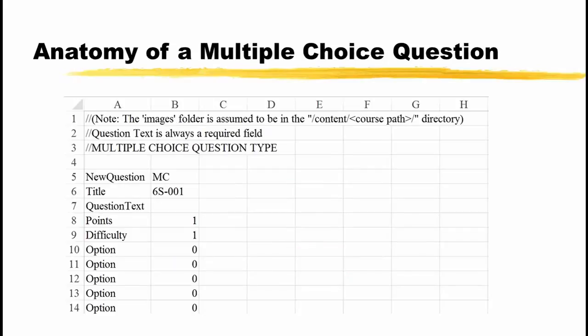The screen shows an Excel file with some comments and one multiple-choice question. The comments are different, but they are entered the same way. The new question in cell A5 is the same, but the type in cell B5 is now MC, short for multiple-choice.